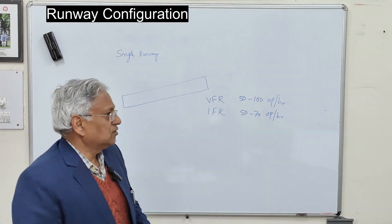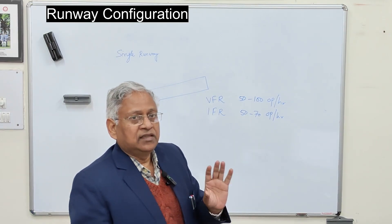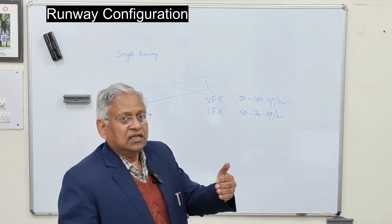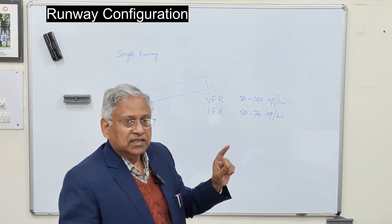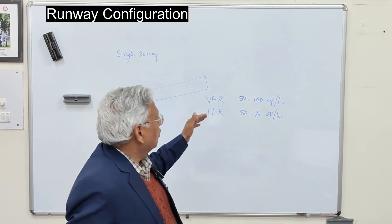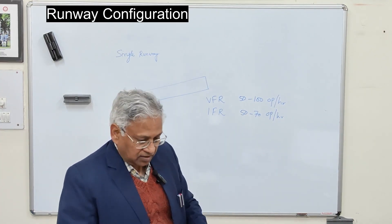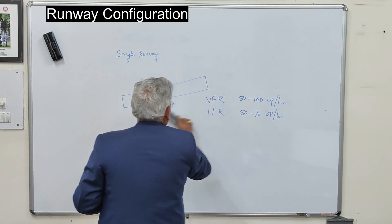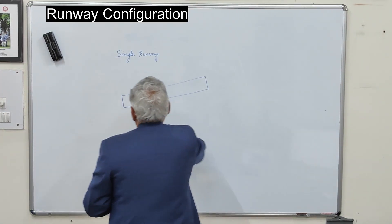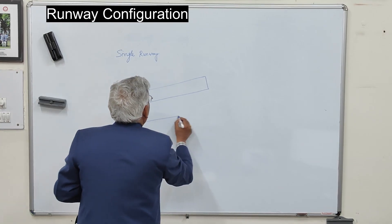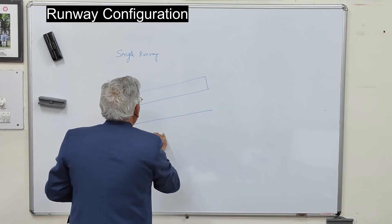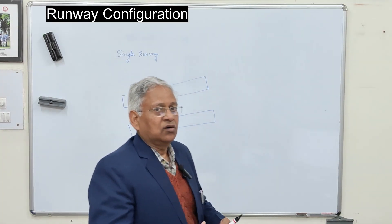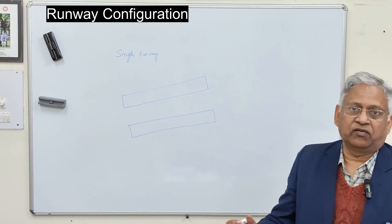Those are the capacities of a single runway. If a single runway is not able to provide enough wind coverage, or the air traffic volume demand is not met, then we go for parallel runways. If wind conditions are uniform but a single runway cannot meet traffic demand, we use parallel runways, which can be two, three, or four depending upon the traffic requirement.